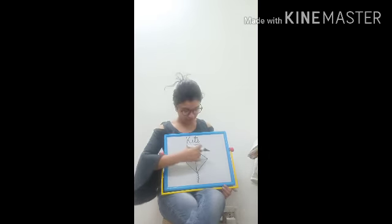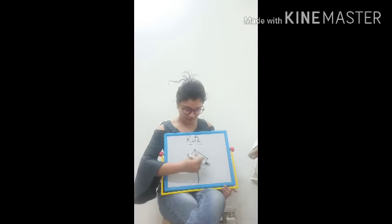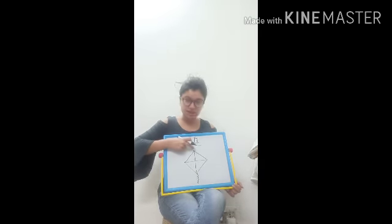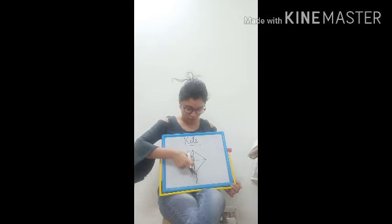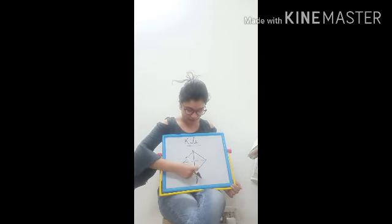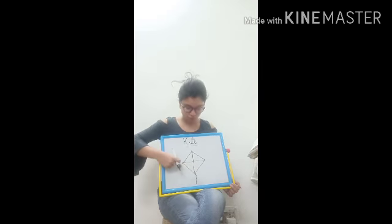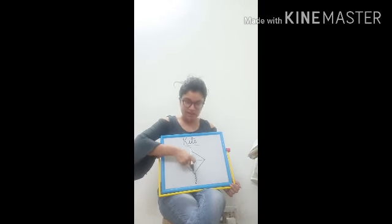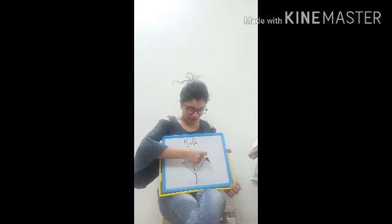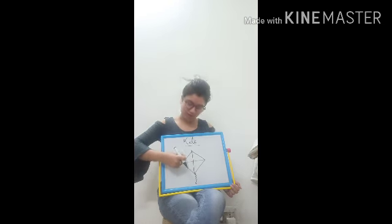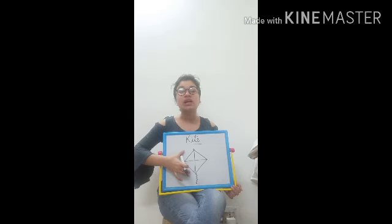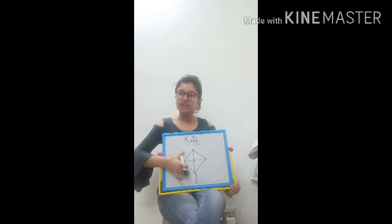So, I will repeat again. First, make a triangle. Then parallel to this mid line, point out one more line. Okay? And join these lines from here and to here. And make a standing line in between. And from here, one sleeping line. And we will have one kite. Okay?